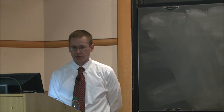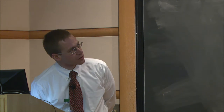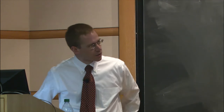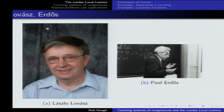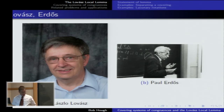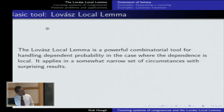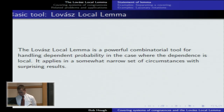I'm going to spend about the first half of the talk doing a couple of examples of the Lovász Local Lemma, just because it may not be familiar to everyone, and then I'll talk about the Erdős problem that I solved using it at the end. The lemma goes back to Lovász and Erdős, a paper from 1975. It's a lemma from probabilistic combinatorics — a powerful combinatorial tool for handling dependent probability where the dependence is local, and it applies in a somewhat narrow set of circumstances with surprising results.